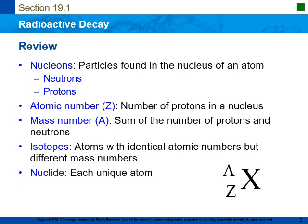An isotope refers to atoms with identical atomic numbers but different mass numbers — they will differ in the number of neutrons found in the atom. And a nuclide is a general term for an isotope, so it's just a unique atom.